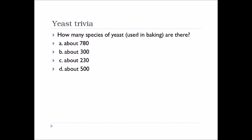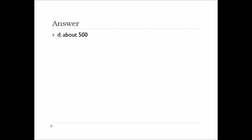Now it's time to test your knowledge and how well you were paying attention to my first slide about yeast. How many species of yeast used in baking are there? A: about 780, B: about 300, C: about 230, D: about 500. The answer is D: about 500.